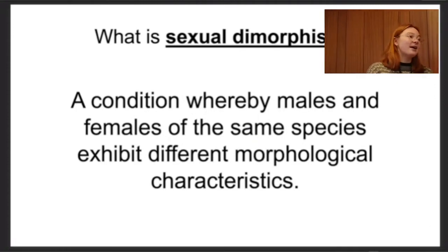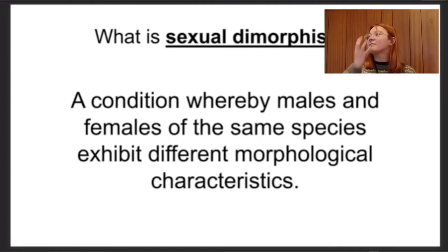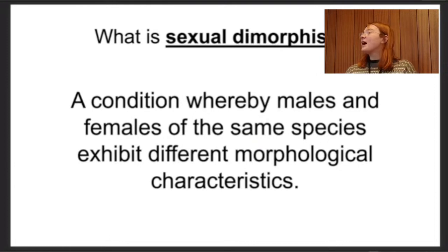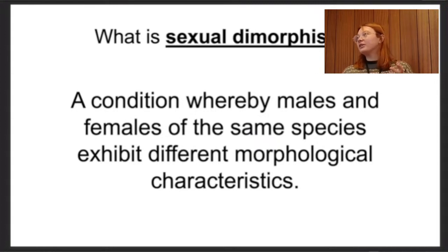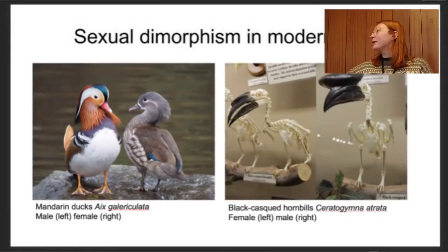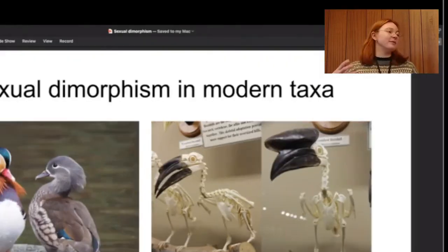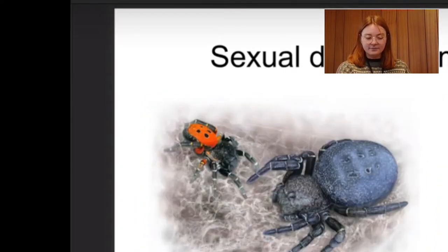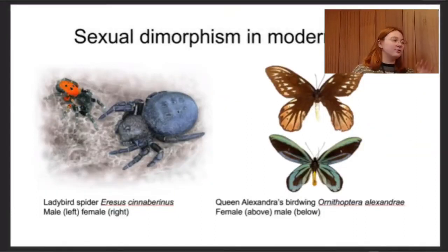We see sexual dimorphism a lot today in mammals — elephant seals, where males have that distinctive enlarged nose and females look quite different — and lions, with manes on males but not females. In birds, which we'll focus on heavily today because birds and dinosaurs are related, we have mandarin ducks where males have really bright, beautiful plumage and females are quite bland. The hornbill is interesting because it has a keratinous beak structure that could potentially be fossilized.